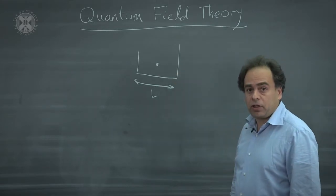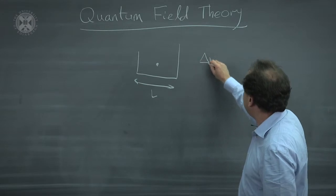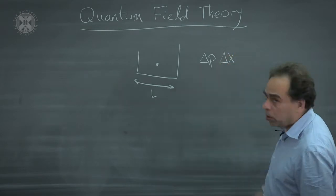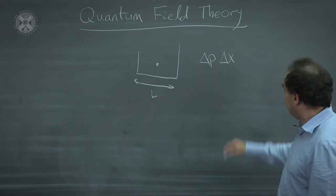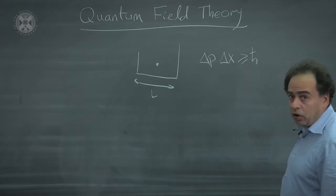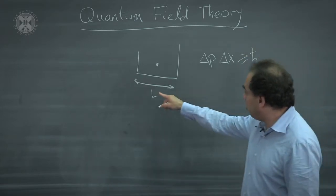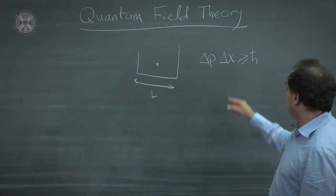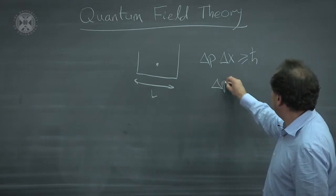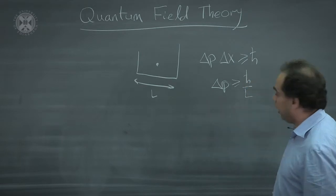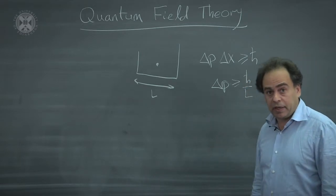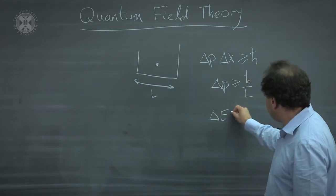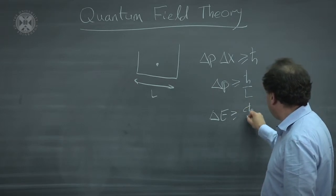Now, based on the uncertainty principle, we know that there is some uncertainty in the momentum, which is connected with the accuracy at which we want to localize the particle in position, and that has to be larger than of order h-bar. Since we have localized the particle in position to the extent that we know the length L, then delta p must be larger than h-bar over L. Because this is a relativistic particle, we also have uncertainty in the energy, which is similarly c times h-bar over L.